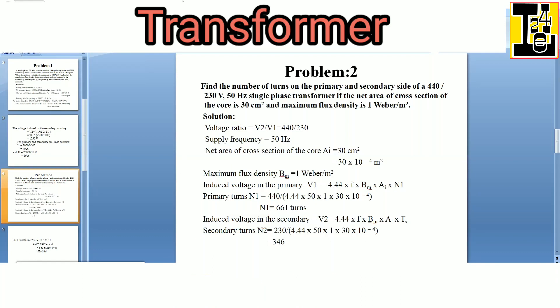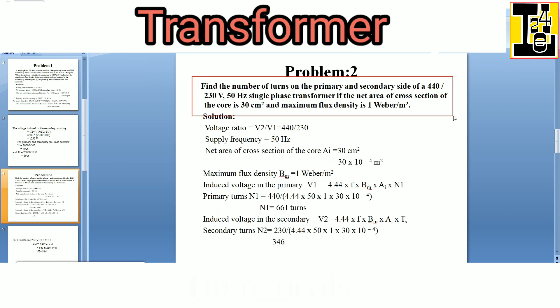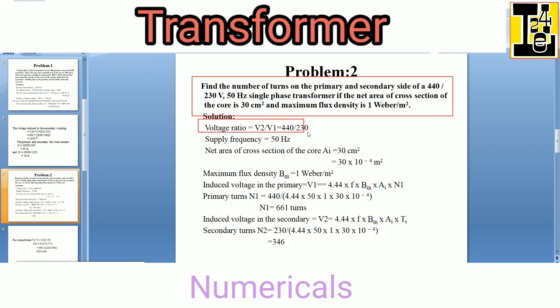Find the number of turns on the primary and secondary side of a 440 volt / 230 volt, 50 hertz single phase transformer, if the net cross sectional area of the core is 30 centimeter square and maximum flux density is 1 Weber per meter square.